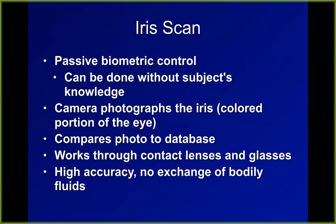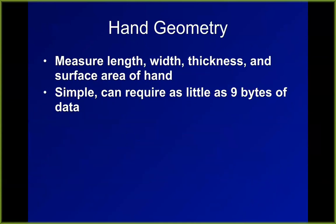Iris scans are still not commonly used on consumer devices because they're more expensive than fingerprint readers. Hand geometry is another biometric — you put your hand in a frame that holds it about four inches above an infrared reader and it measures the pattern of veins in your hand.